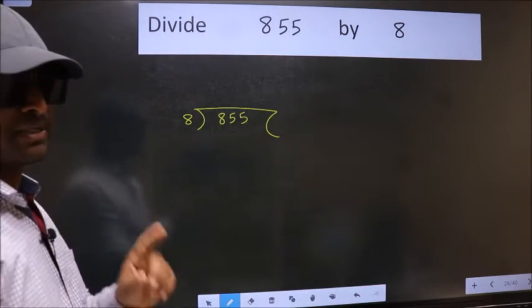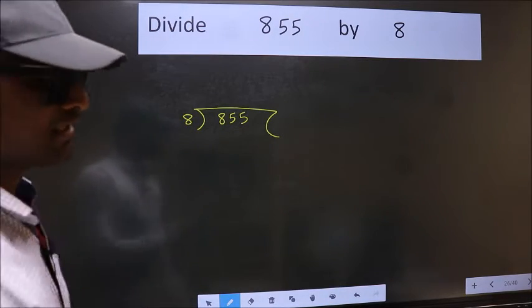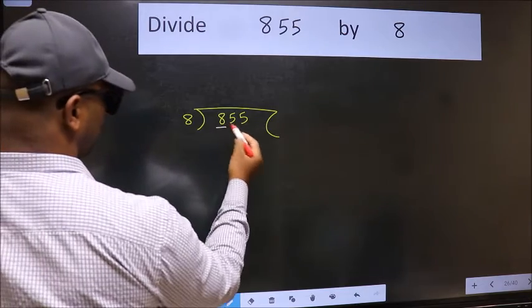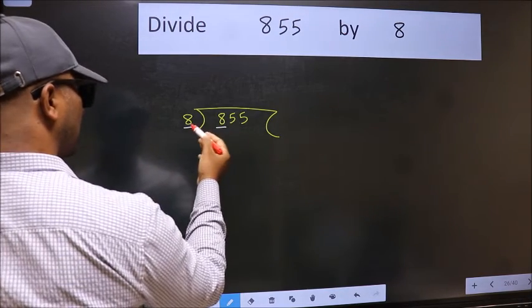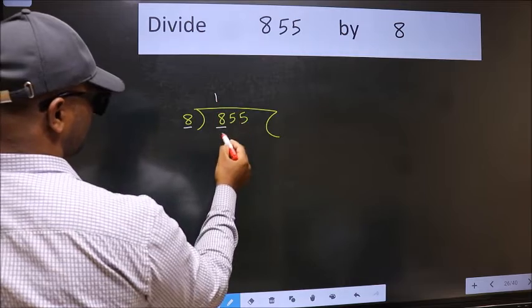This is your step 1. Next, here we have 8 and here 8. When do we get 8 in 8 table? 8 once 8.